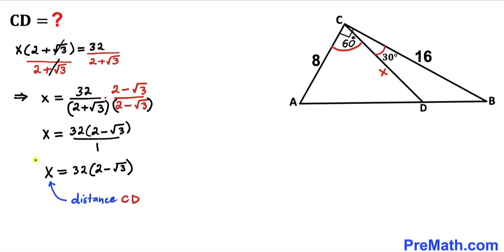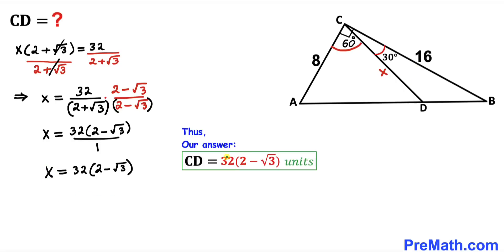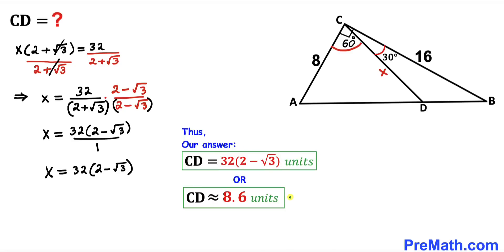Since x represents the distance CD, the length of CD is 32 times (2 minus √3) units, which is approximately 8.6 units. Thanks for watching — please don't forget to subscribe for more exciting videos.